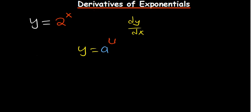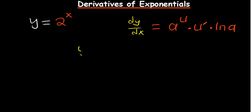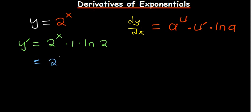The general rule for a to the power u is: maintain a to the power u, multiply by the derivative of the power, and also multiply by the natural log of the base a. So for y = 2^x, dy/dx is 2^x times the derivative of x (which is 1) times ln(2). The answer reduces to 2^x · ln(2).